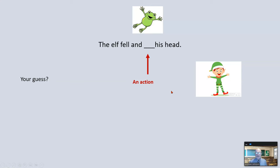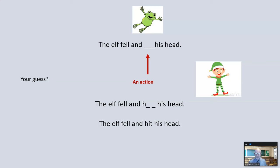It doesn't matter if they recognize every word as long as they're creating meaning with print. We teach students to let their eyes go to both sides of the word to look for clues — we teach this explicitly. We use what's called a cloze: 'The elf fell and blanked his head' — it's an action, what do you think? We write down a couple ideas, then give another clue. We do these cloze and maze activities — taking two to six minutes — but we're developing their ability to use semantic clues or context to recognize words during reading.